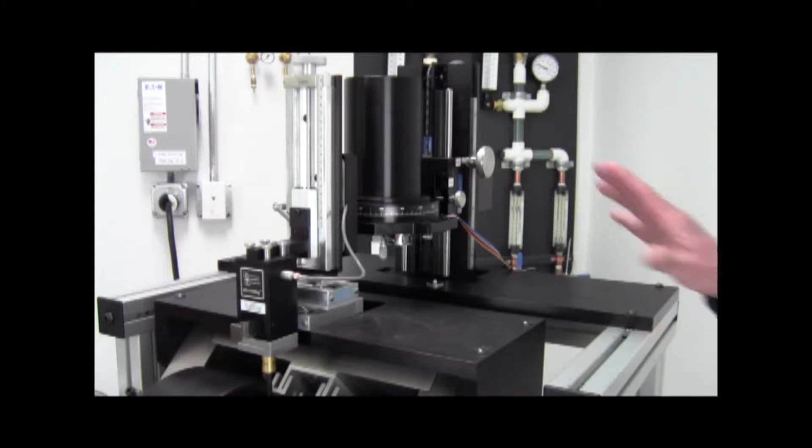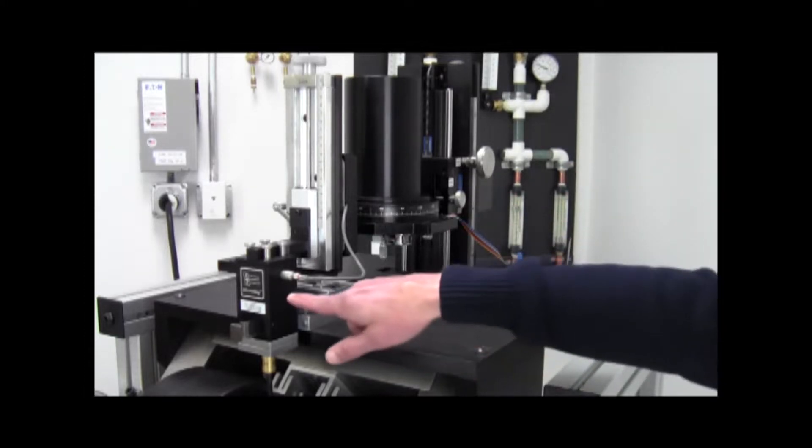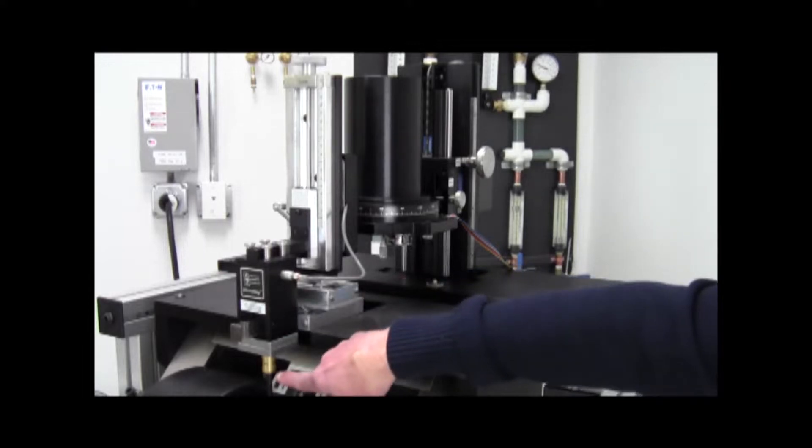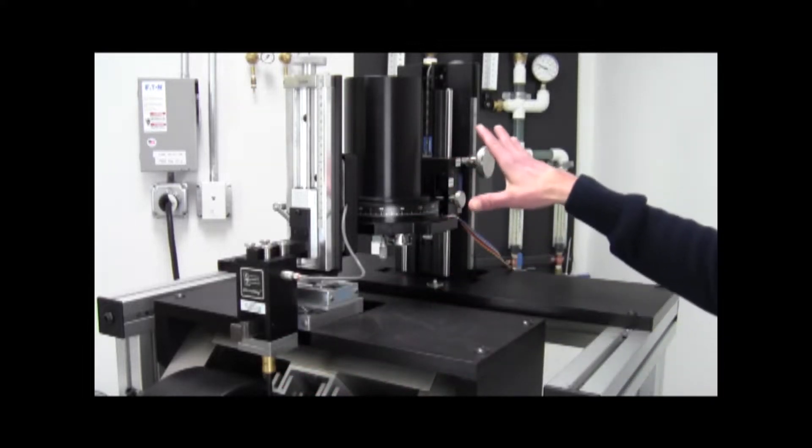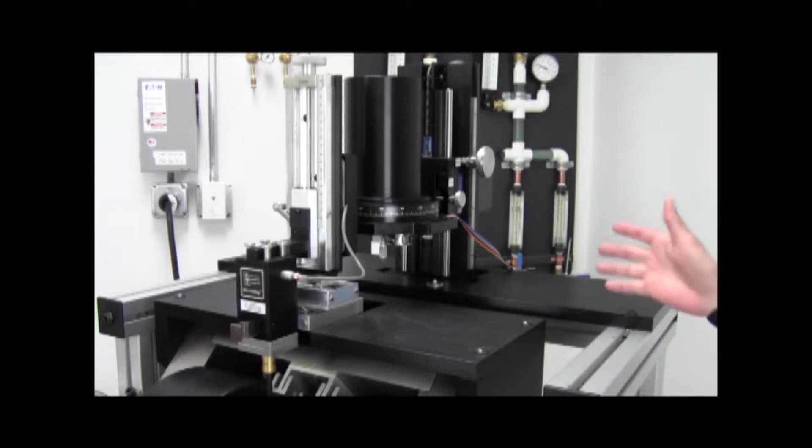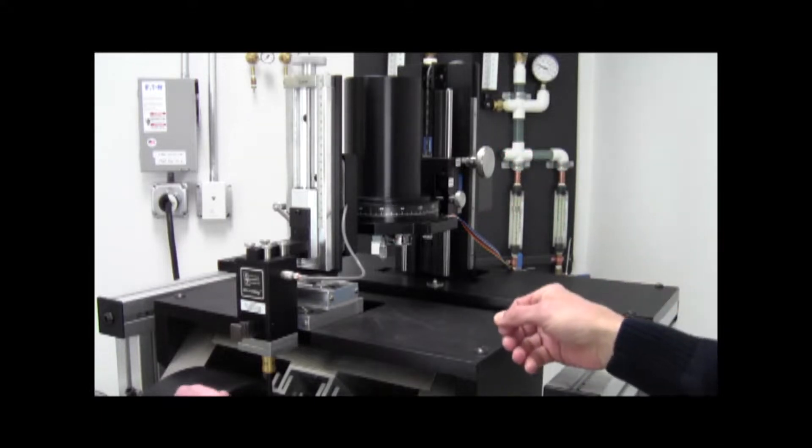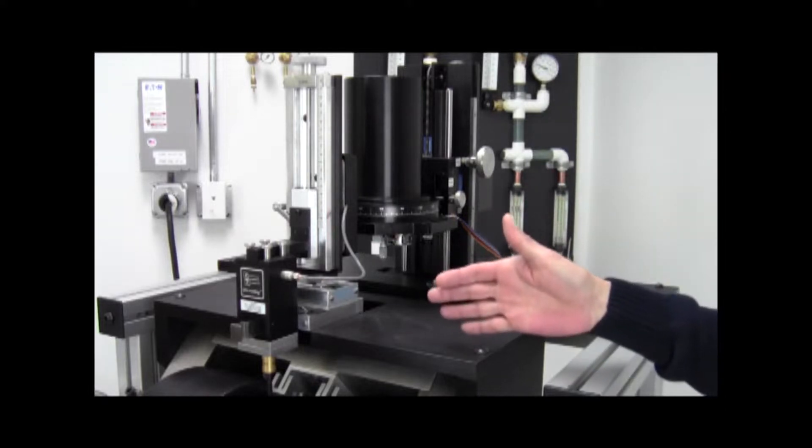This combination system right now is configured as an AGM. So this is the AGM head, this is the AGM probe. The VSM head is shown in a parked position here. To convert between an AGM and a VSM, you simply remove the AGM head and slide the VSM head into place.